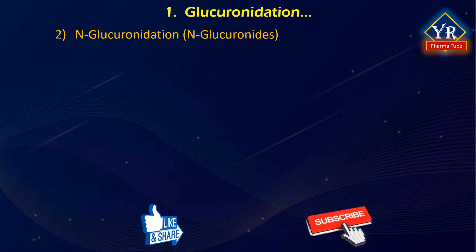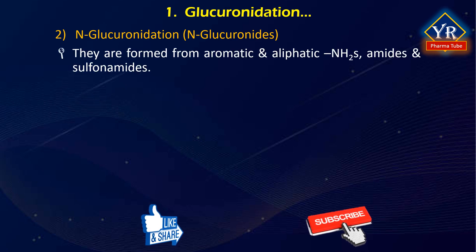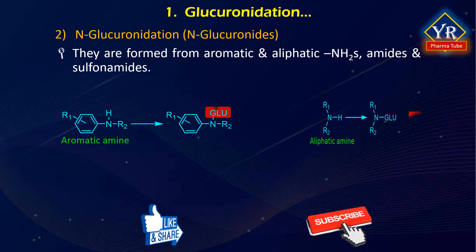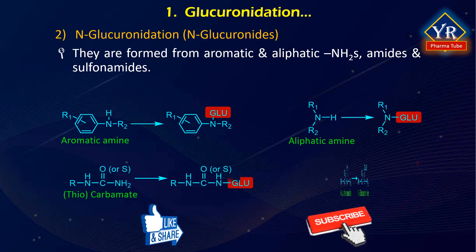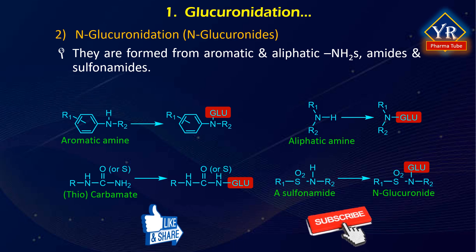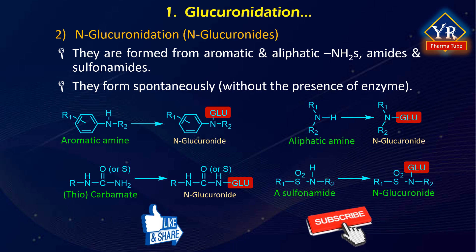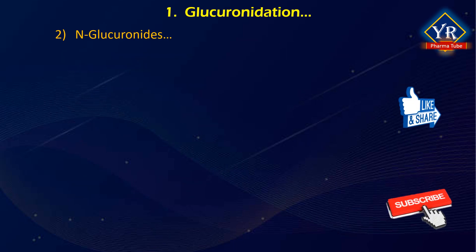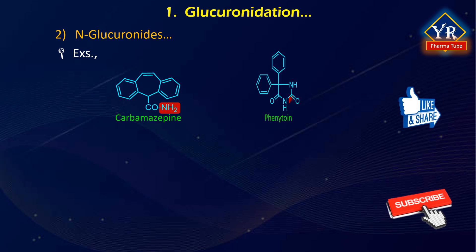N-glucuronidation: N-glucuronides can be formed from primary aromatic amines, tertiary aliphatic amines, carbamates and sulfonamides. N-glucuronides may form spontaneously, that is without the presence of an enzyme. Glucuronidation of aromatic and aliphatic amines is generally a minor pathway in comparison with N-acetylation or oxidative processes, that is oxidative deamination. For example, the N-glucuronidation of carboxamides is exemplified by carbamazepine and phenytoin.